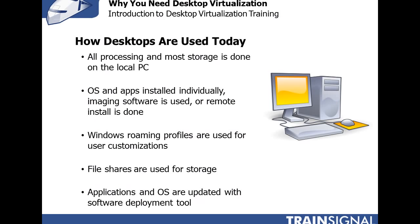At most companies today who aren't using desktop virtualization, they've deployed desktop or laptop computers to their end users. On those desktop computers, processing is done by the application, and most user data is stored locally. The operating system and applications may have been individually installed on every desktop or laptop, or they may have used imaging software or remote installation. In many cases, Windows roaming profiles are used for user customizations, and file shares are used for end-user application data storage.